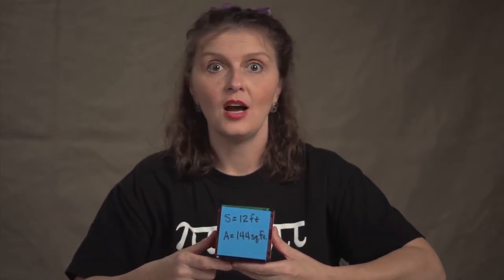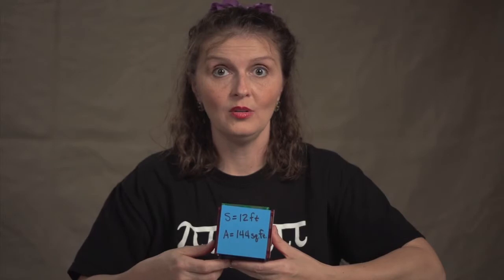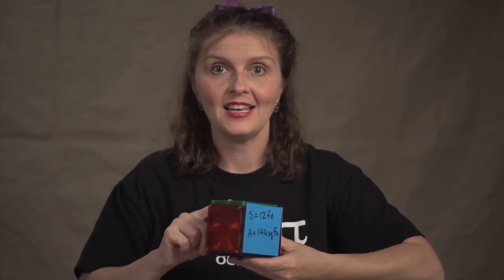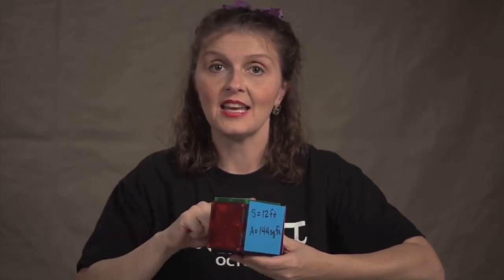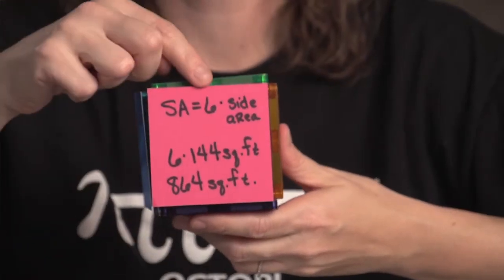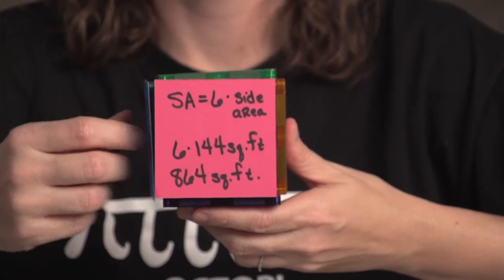If you consider a die — like a rolling die that you roll — it's also a cube, just much smaller than 12 feet, and it has six sides. It has the numbers one through six, so a cube has six sides. The surface area of the cube is six times the area of one side.